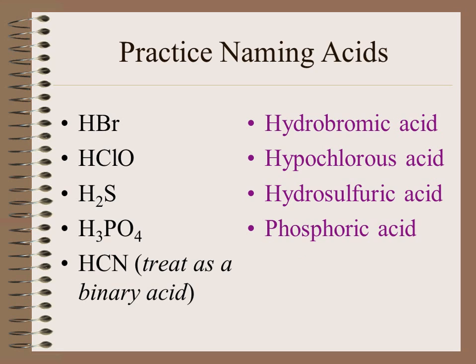The last formula we see here is kind of an exception to the rule. It is a ternary acid in that it is composed of hydrogen and a polyatomic ion; however, when it's named, it is treated as if it is a binary acid. So when we name HCN, it does in fact start with the hydro prefix, and we would name this hydrocyanic acid.